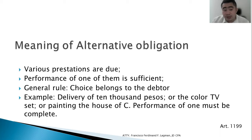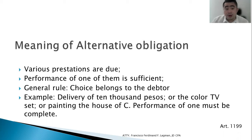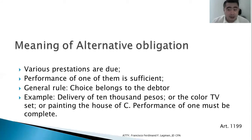The general rule is the choice belongs to the debtor. For example: delivery of 10,000 pesos, or the color TV set, or painting the house. The performance of one must be complete. So in this scenario, I promise to give you either 10,000 pesos, or the color TV set, or I will paint your house. There are three prestations here, but only one will be performed. That makes it an alternative obligation.